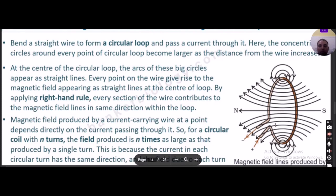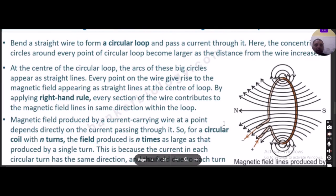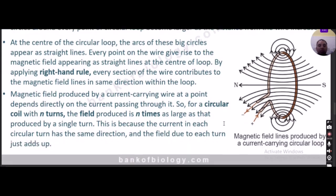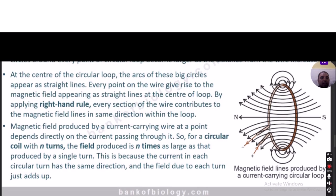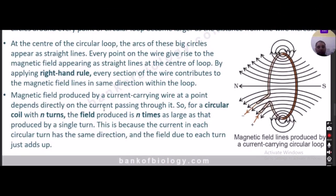Applying the right-hand thumb rule, every section of the wire contributes to magnetic field lines in the same direction within the loop. The magnetic field produced by a current-carrying wire at a point depends directly on the current passing through it. For a circular coil with N turns, the field produced will be N times as large as that produced by a single turn, because the current in each circular turn has the same direction and the field due to each turn adds up.